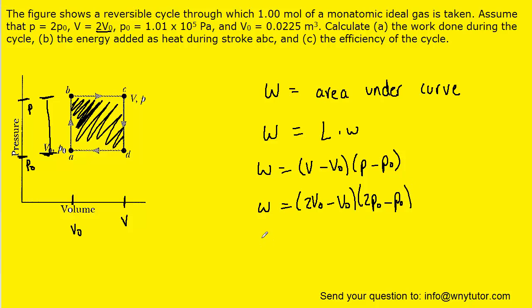If we simplify, we can see that the work becomes simply V0 times P0, and then we can just plug in the given values. When we simplify that, we get approximately 2.27 kilojoules. So this would be the correct answer to part A of the question.